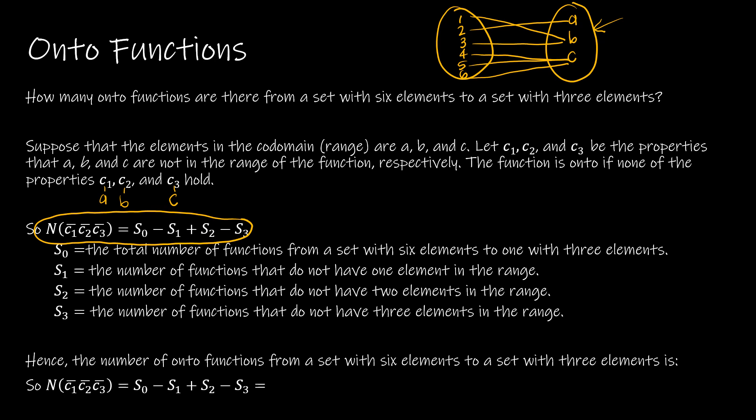So again, how do I find the total number of functions? The total number of functions from a set with six elements to one with three elements. So we've got A, and we've got B, and we've got C, and all of those can be mapped to from six elements. So we have three elements, and all three can be connected to six elements. So this is 3⁶.